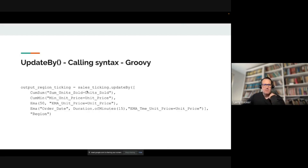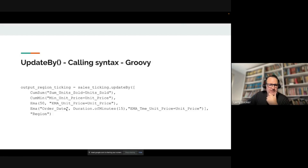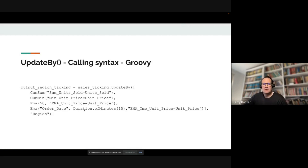The Groovy syntax is actually extremely similar. Update By, cumulative sum, cumulative minimum, EMA — this is an overloaded function compared to the expressive Python syntax. In the first case we're specifying just the number of rows for the EMA to operate over. In the second, we're specifying which column to use for timestamps and expressing a 15-minute reverse-looking EMA.